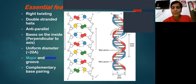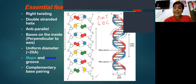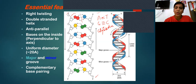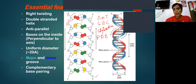Most importantly, there is complementary base pairing: adenine always base pairs with thymine via a double bond, and guanine always pairs with cytosine via a triple bond. The bonds between the bases are hydrogen bonds. The bond between the base and the sugar is a glycosidic bond. The bond between sugar and phosphate is a phosphodiester bond. These three types of bonds in DNA are generally asked in exams.